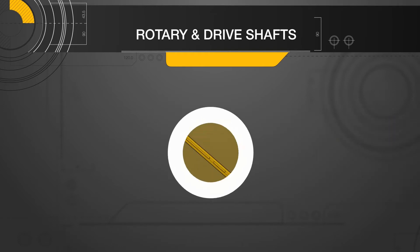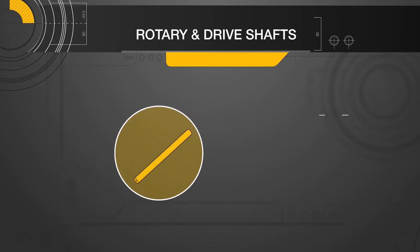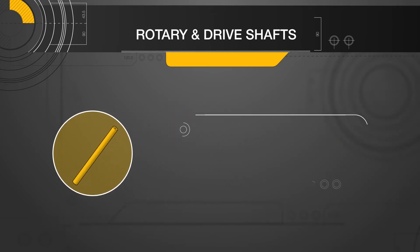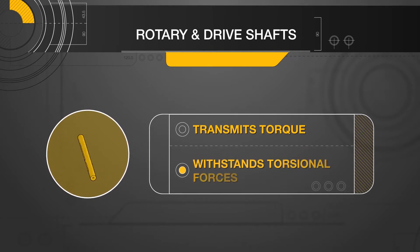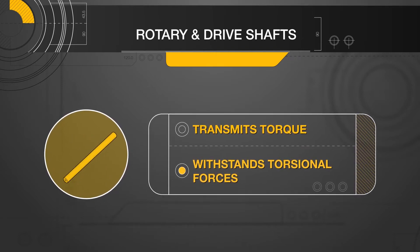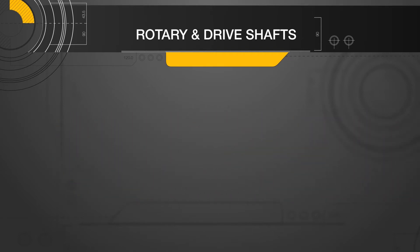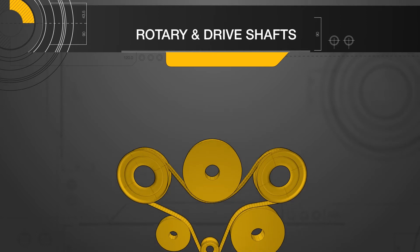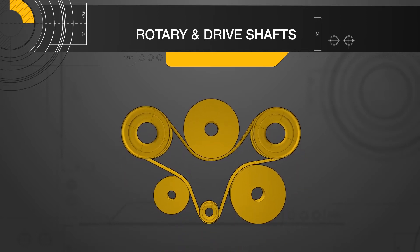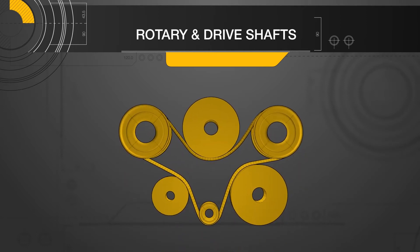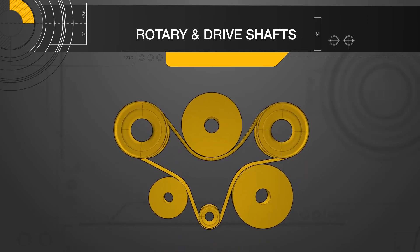Rotary and drive shafts are similar in shape to linear shafts, except they are designed to transmit torque and withstand torsional forces. The most popular use of these shafts is in power transmission, more specifically with timing pulleys and belts.